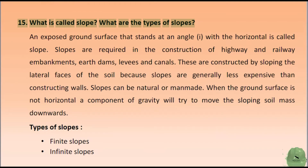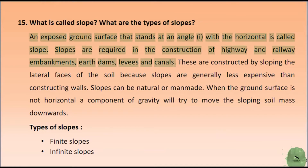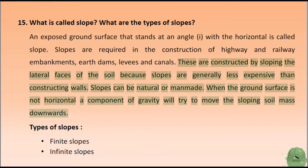What is called a slope? What are the types of slopes? An exposed ground surface that stands at an angle with the horizontal is called a slope. Slopes are required in the construction of highway and railway embankments, earth dams, levees, and canals. These are constructed by sloping the lateral faces of the soil because slopes are generally less expensive than constructing walls.